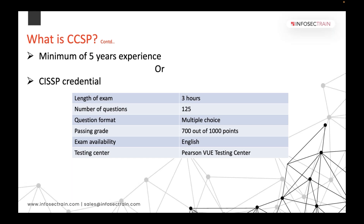To sit for the exam, you require a minimum of five years of experience in information security in any of the domains we will discuss. The exam length is three hours with 125 multiple choice questions. The passing grade is 700 out of 1000 points. You must attempt all 125 questions within the three hours. The exam is currently available in English and can be booked online through ISC².